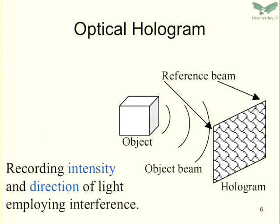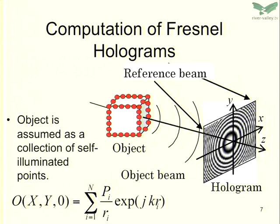Now I would talk about the fringe printer. Here is the optical hologram. As you might know, the hologram records intensity and direction of light using interference. Here is how to compute the Fresnel hologram — it just simulates physical phenomena in a computer. We assume the object is a collection of self-illuminated points. We can easily calculate the wavefront from a single point, then sum up all points to get the hologram.